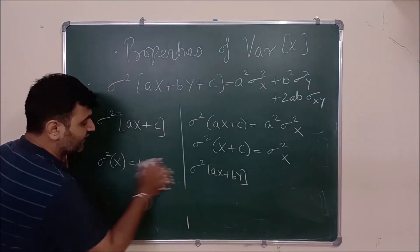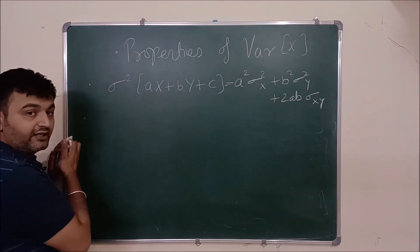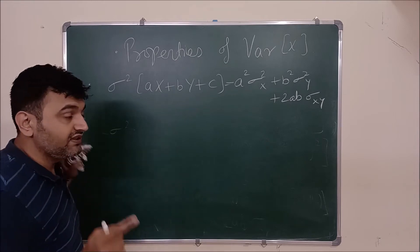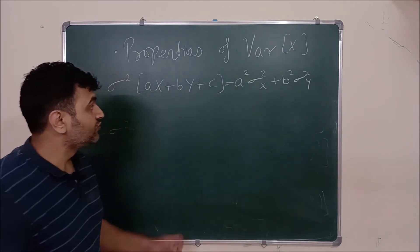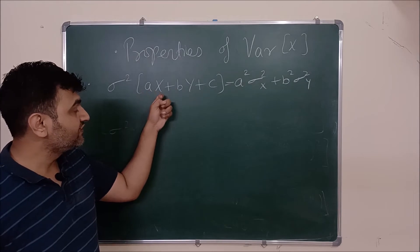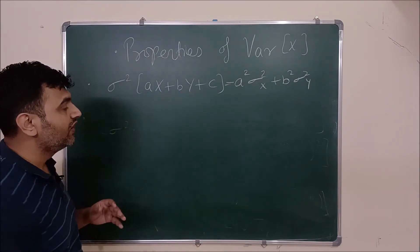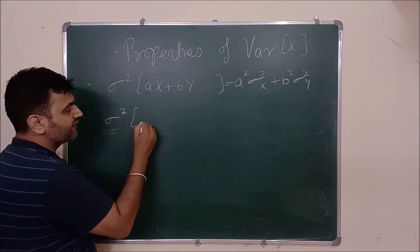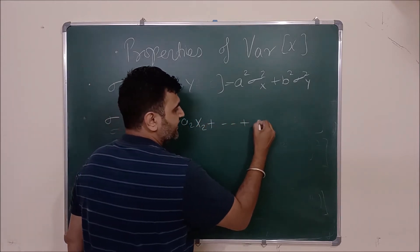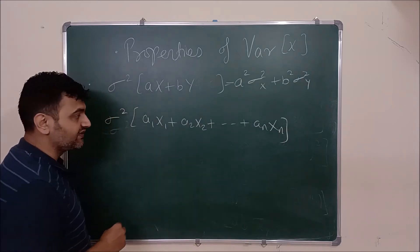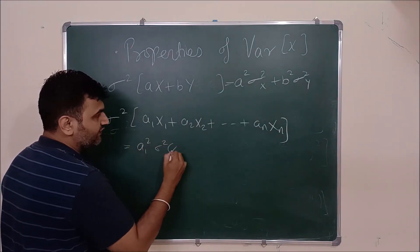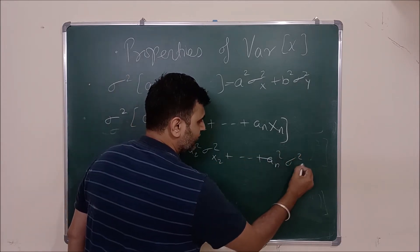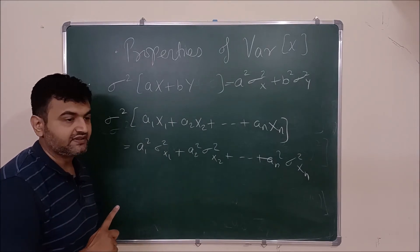Another important observation: when x and y are independent variables, their covariance is zero, so the 2ab·Cov(x,y) term vanishes. Therefore Var(ax + by + c) = a²·Var(x) + b²·Var(y). In general, for n independent random variables x₁, x₂, …, xₙ: Var(a₁x₁ + a₂x₂ + … + aₙxₙ) = a₁²·Var(x₁) + a₂²·Var(x₂) + … + aₙ²·Var(xₙ). This is only true when all variables are independent; otherwise it is not.